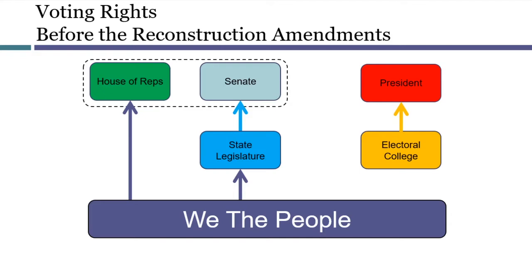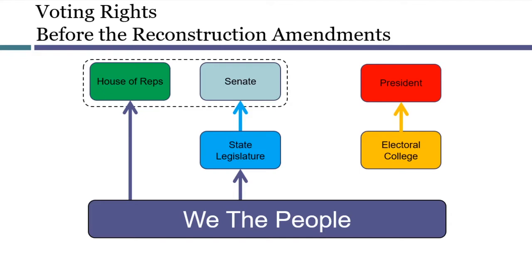Even for adult white males, the states allowed only those who owned property to vote, although the amount of property differed considerably from one state to another. At the Constitutional Convention, the framers realized they would never be able to reach agreement for a nationwide standard for voter qualifications. So they decided to let the states decide. Whoever a state would allow to vote for its own statehouse could vote for the United States' offices.